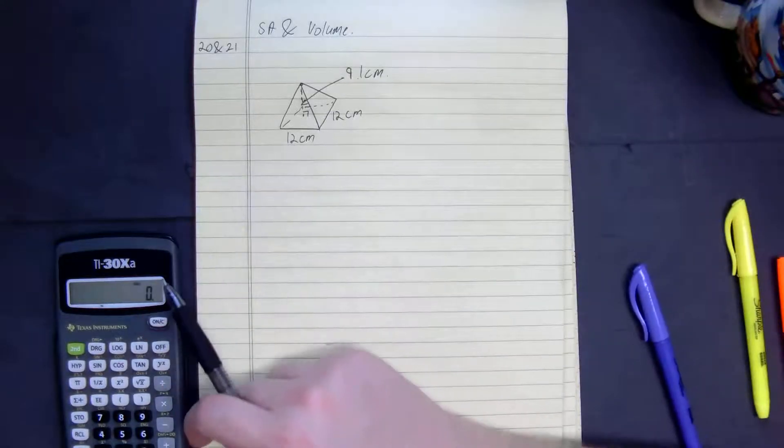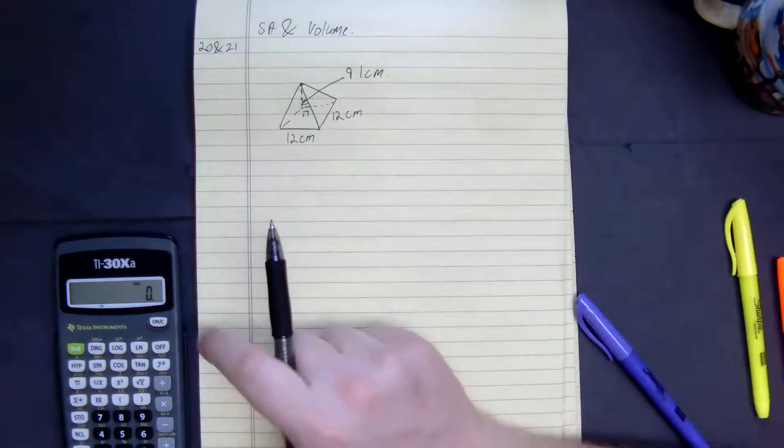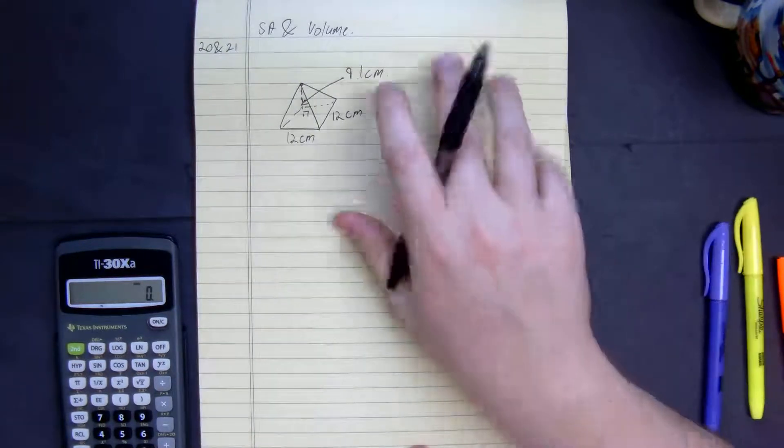We're looking at this pyramid. This pyramid, we want to find the surface area and volume of it. So, let's do volume first.